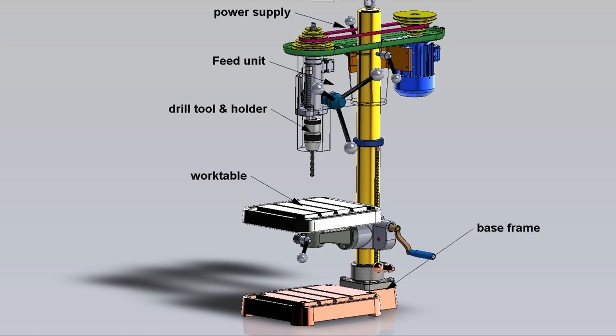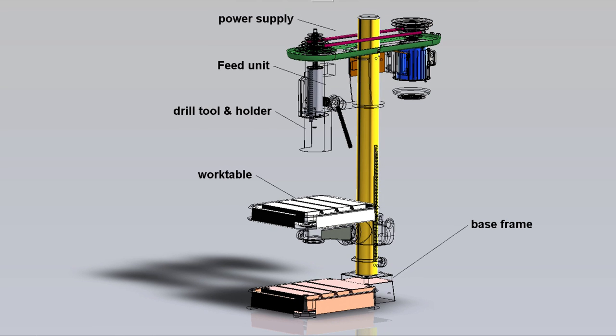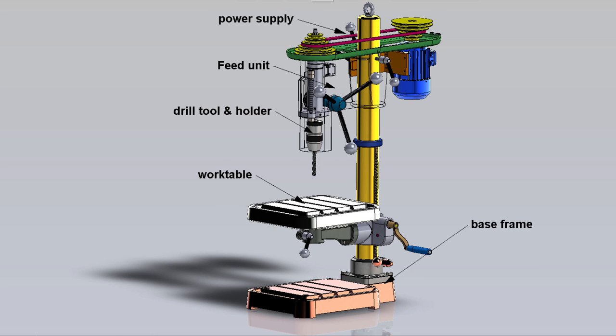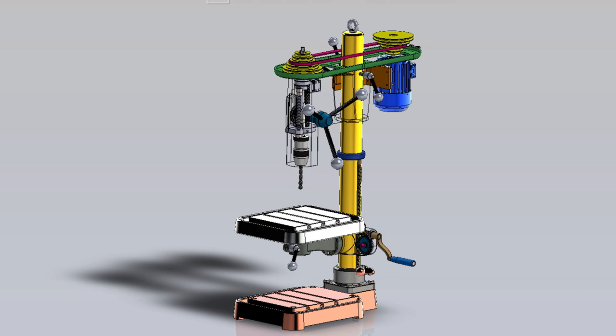Drilling is an operation of making a circular hole by removing a volume of metal from the job by cutting tool called a drill. A drill is a rotary end cutting tool which has one or more cutting edges and usually one or more flutes for the passage of chips and the admission of cutting fluid.